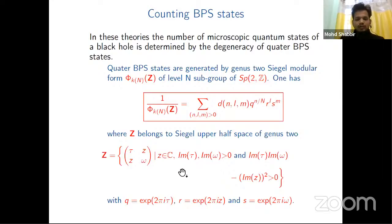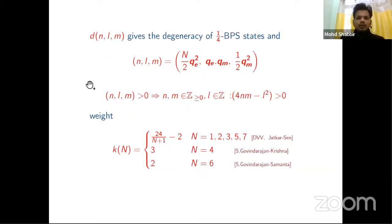The Siegel upper half plane is defined by these relations: Z belongs to complex numbers, and τ and ω are upper half plane numbers, and this relation holds. We are making the following identifications. The triplet (n,l,m) is simply defined by these numbers, and this 'greater than zero' means these conditions follow. The weight function for prime N values is given by this, and this has been shown in work of Dijkgraaf, Verlinde, and Verlinde. For composite values of N = 4 and 6, this has been shown by David, Jatkar, and Sen.